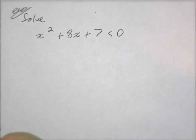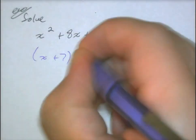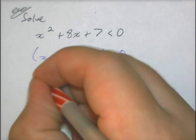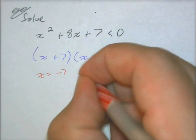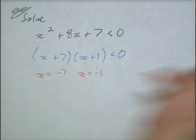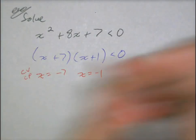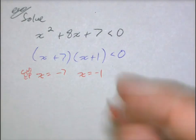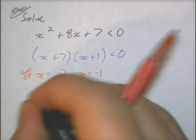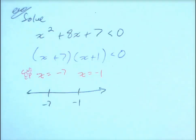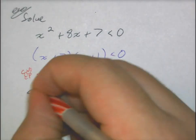With this one, it's already less than 0. So I have (x plus 7)(x plus 1) is less than 0. I can pull out my critical values — negative 7 and negative 1 — and put them on a number line. If I substitute a number less than negative 7, say negative 10, both factors are negative, so that's a positive interval. Between negative 7 and negative 1, I test negative 3: that's positive times negative, which is negative.